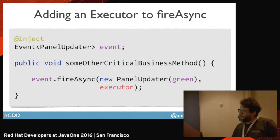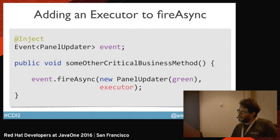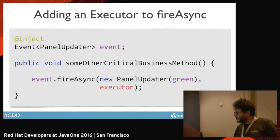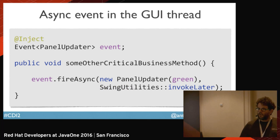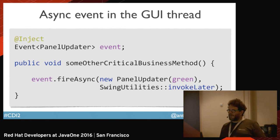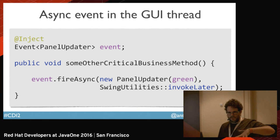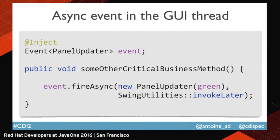We added the possibility to provide an executor in the fireAsync method. You can use it to send an event to a specific thread — for instance, a thread dealing with a UI, like notifying your Swing interface of something using the thread dedicated to that. It helps you do smart things.